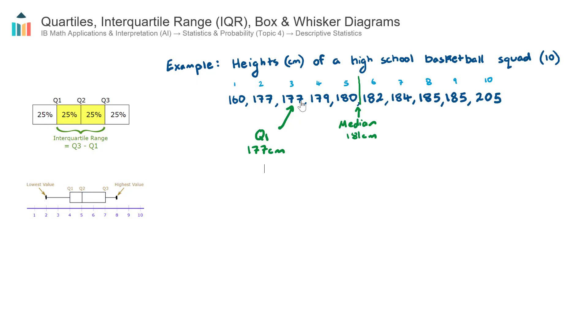And as you could probably guess, the upper quartile, Q3, is going to be the median of the upper half. And in that case here, it'll be this middle value, player 8. So this 185 is our upper quartile Q3, and that is 185 centimeters.